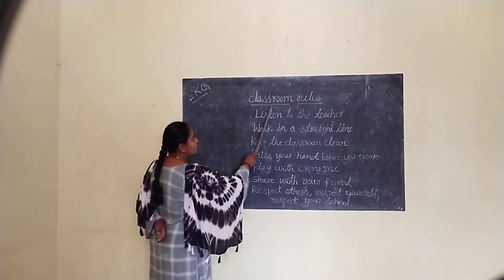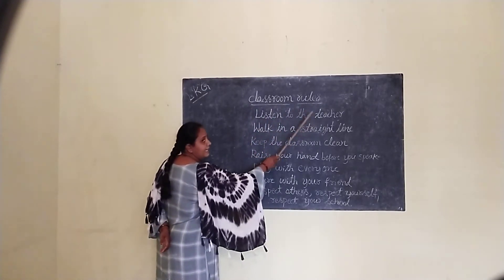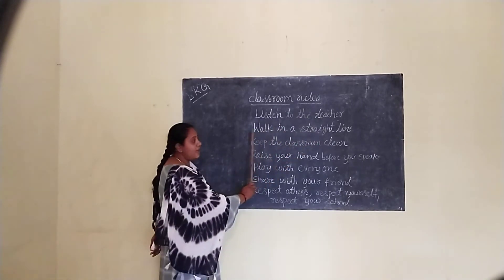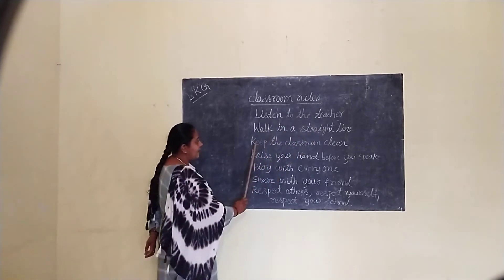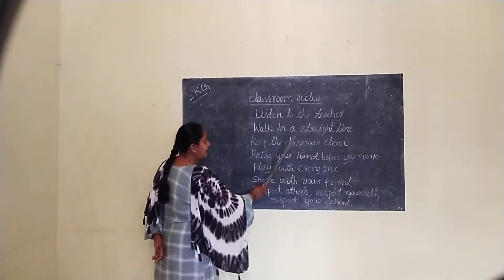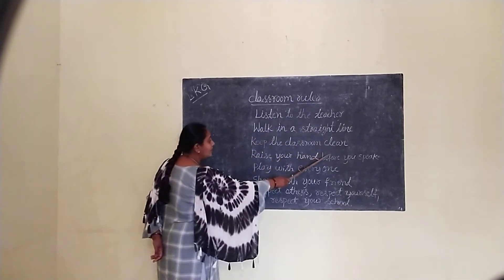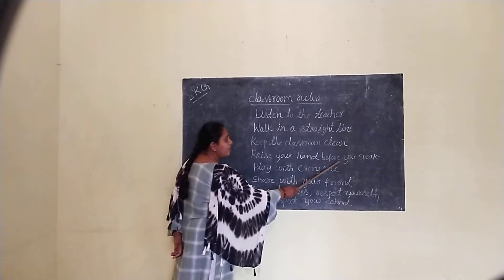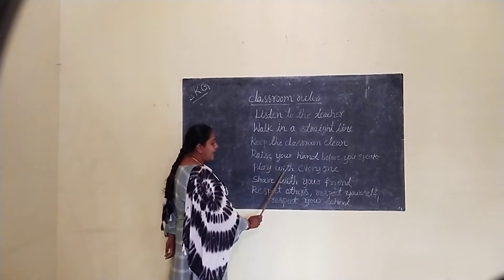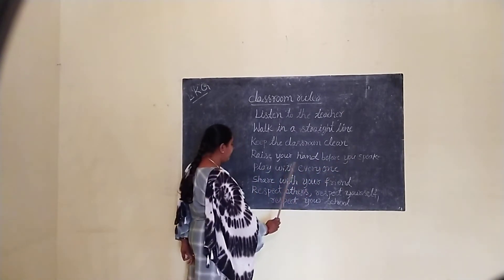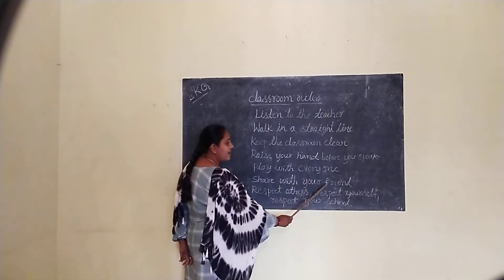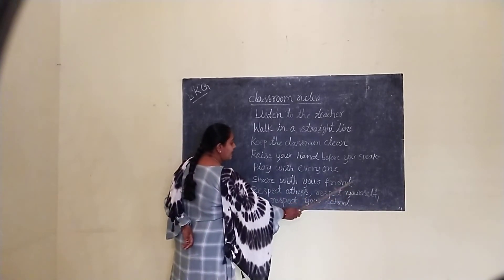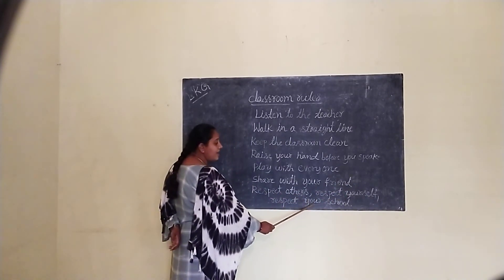Once again, classroom rules: Listen to the teacher. Walk in a straight line. Keep the classroom clean. Raise your hand before you speak. Play with everyone. Share with your friend. Respect others. Respect yourself. And respect your school.